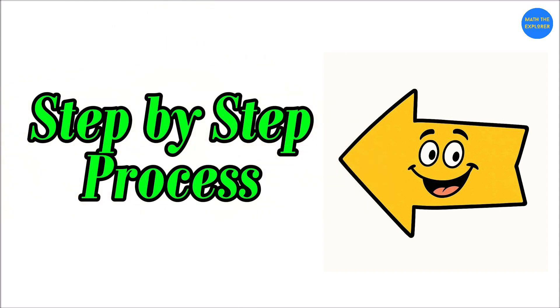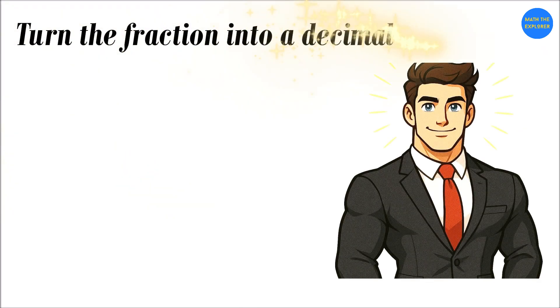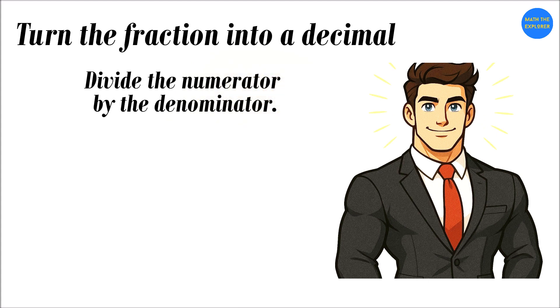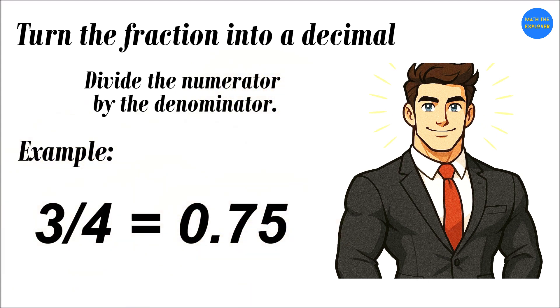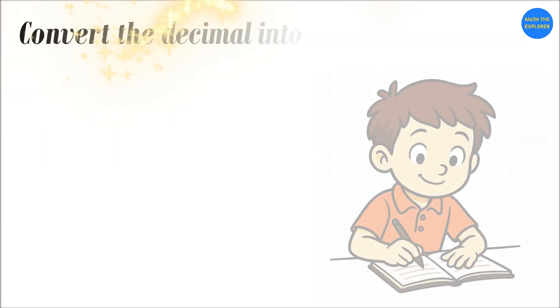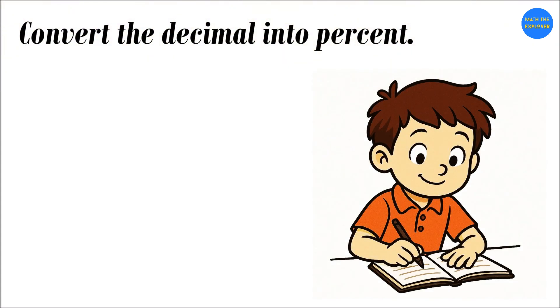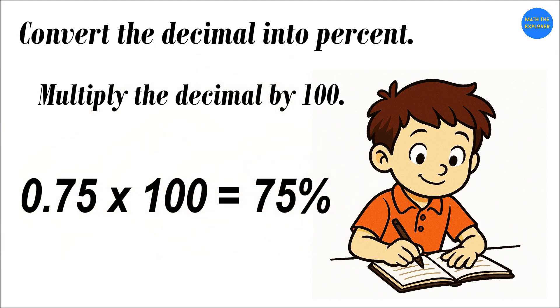Now, let's go step by step. Turn the fraction into a decimal. Divide the numerator by the denominator. Example, three-quarters equals 0.75. Convert the decimal into percent. Multiply the decimal by 100. 0.75 times 100 equals 75 percent. That's all you need to remember.